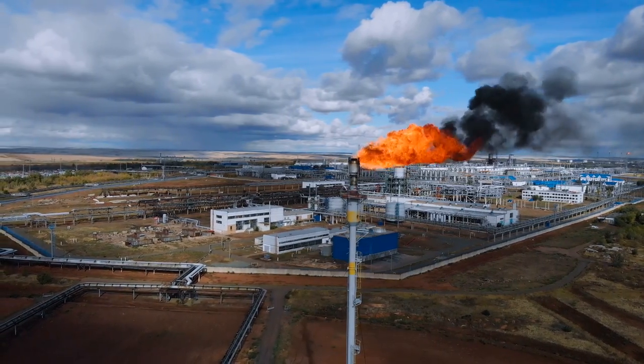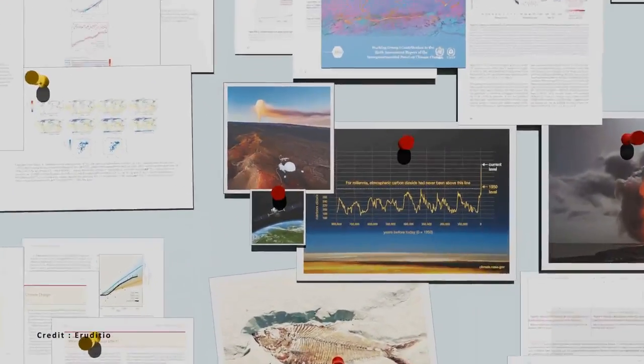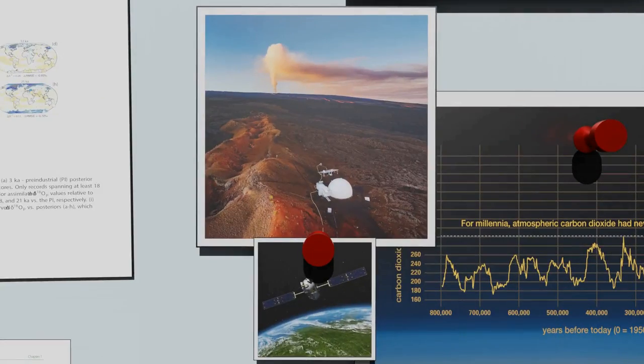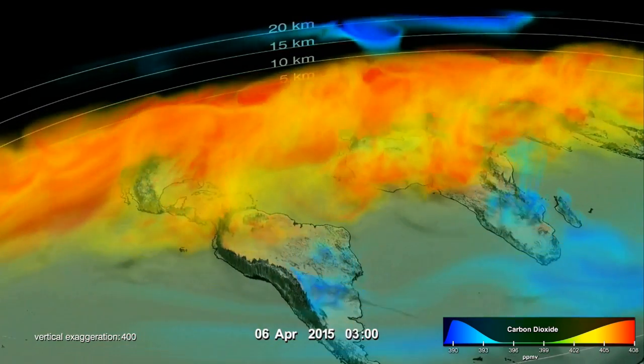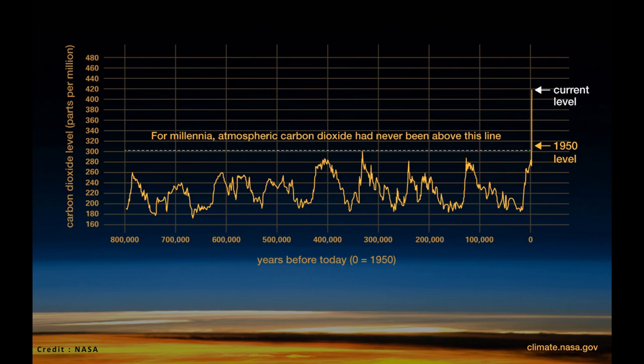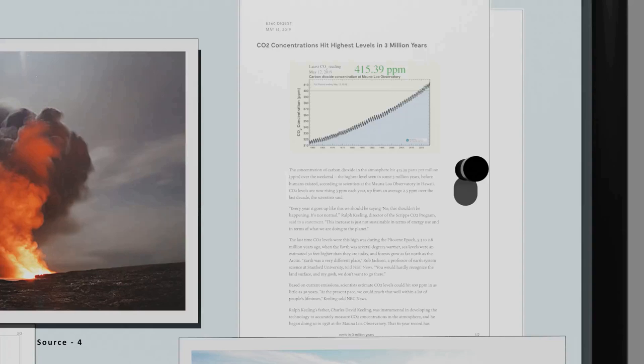Since 1957, the Air Quality Observatory atop Mauna Loa in Hawaii, aided by several orbiting satellites, has been measuring CO2 concentrations in the air. This graph, compiled by NASA, shows the magnitude of this increase compared to the past 800,000 years. The current concentration of CO2 could even be the highest since 3 million years.